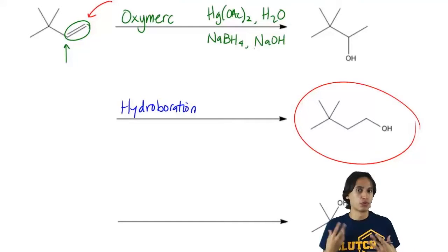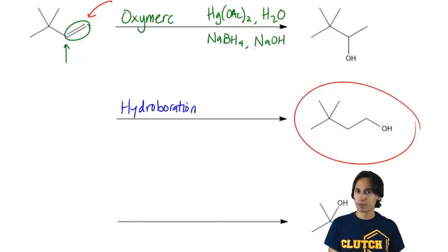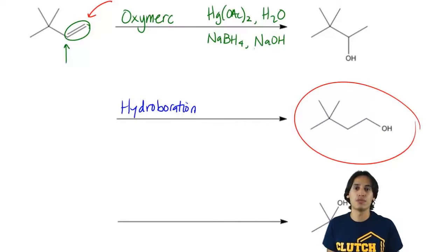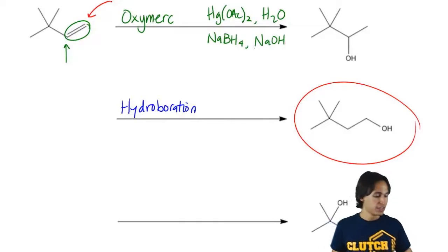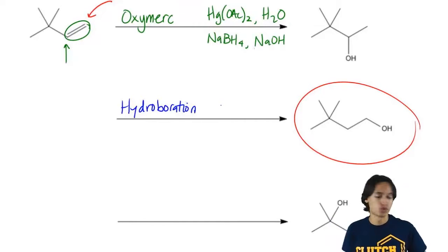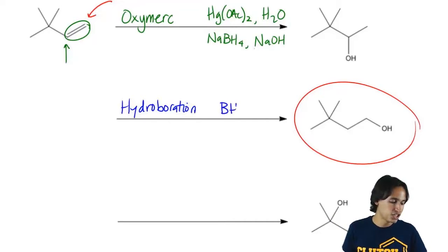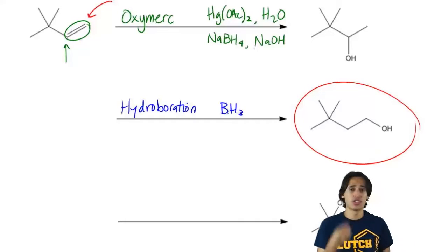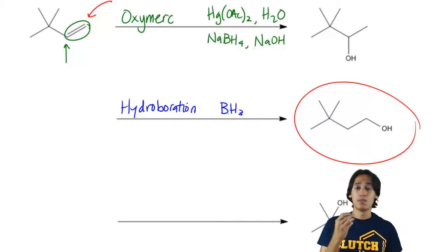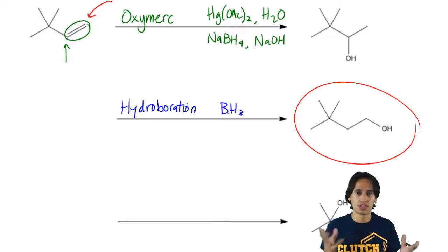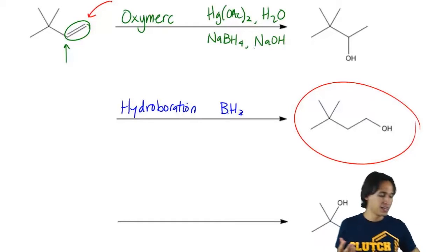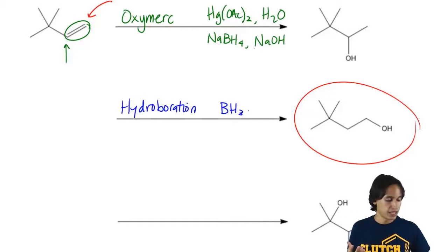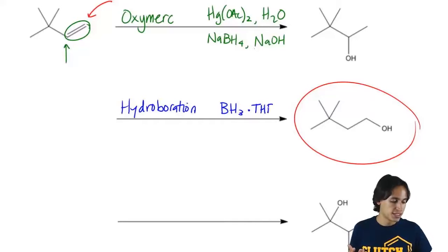Let's remember what the reagents were. Hydroboration means you need boron — it can really be any boron source, most commonly BH3. Your professor or textbook may use a different source of boron; there are all kinds of different sources we can use. BH3 is many times complexed to THF.